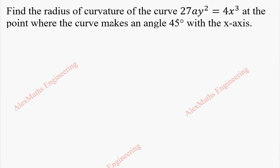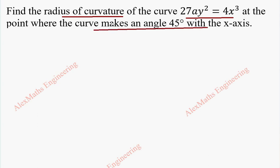Hi students, this is Alex here. In this video, we are going to find the radius of curvature of the curve 27ay² = 4x³ at the point where it makes an angle of 45° with the x-axis.